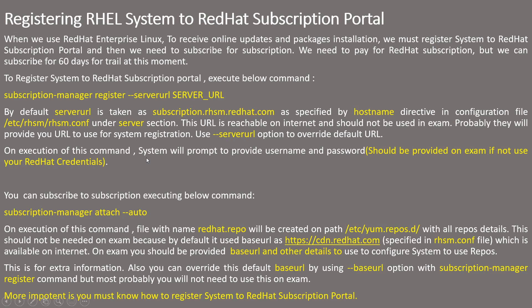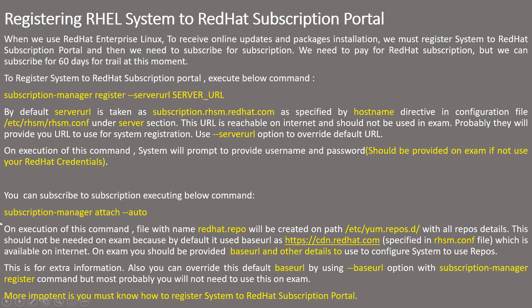This is all about how we can register a RHEL system to the Red Hat portal. In case you need to subscribe, you can execute the command subscription-manager attach --auto. On execution of this command, a file named redhat.repo will be created on this path with all repository details. This should not be needed on the exam because by default it uses base URL as cdn.redhat.com, as specified in the rhsm.conf file, which is again reachable over the internet. On the exam, you should be provided a base URL and other details to configure the system to use repos.